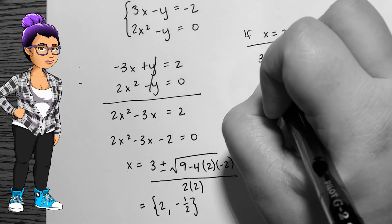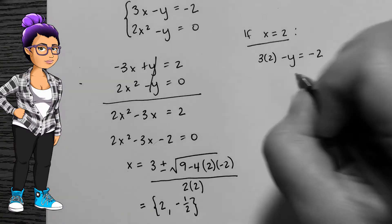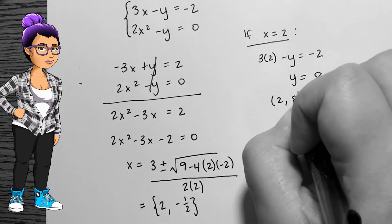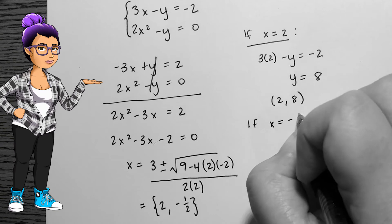If x is 2, then y should be 8 from back substitution. Using that same method, if x is negative 1 half, then y is 1 half. These are my two points of intersection.